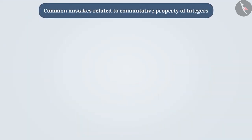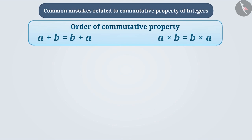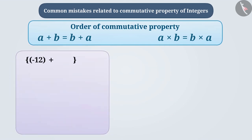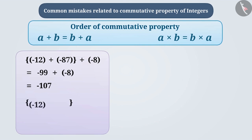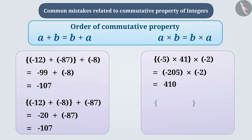Now let us see some common mistakes related to the commutative property. Sometimes, commutative property is remembered only as a formula, but it is not used to simplify the operation of addition or multiplication. For example, minus 12 plus minus 87 plus minus 8 — the integers are added in the same order to find the result. It is important to understand that by changing the order to minus 12 plus minus 8 plus minus 87, the result can be obtained more easily. Similarly, instead of performing minus 5 multiplied by 41 multiplied by minus 2, it is easier to get the result of minus 5 multiplied by minus 2 multiplied by 41. Therefore, it is necessary to understand the use of commutative property in our day-to-day life.